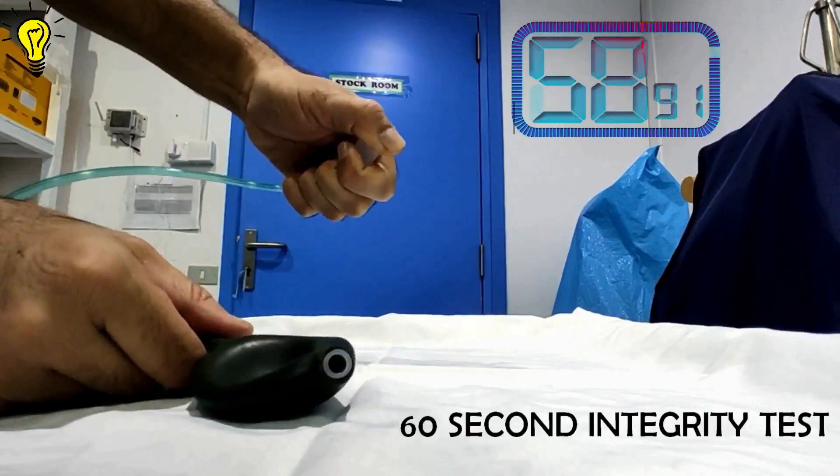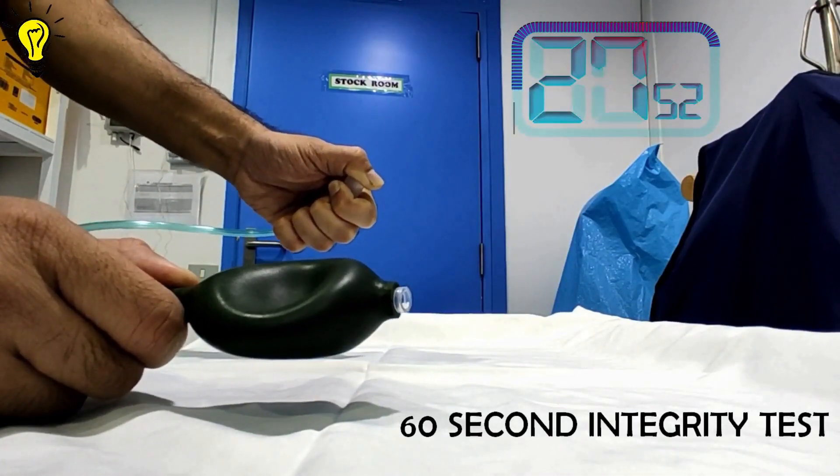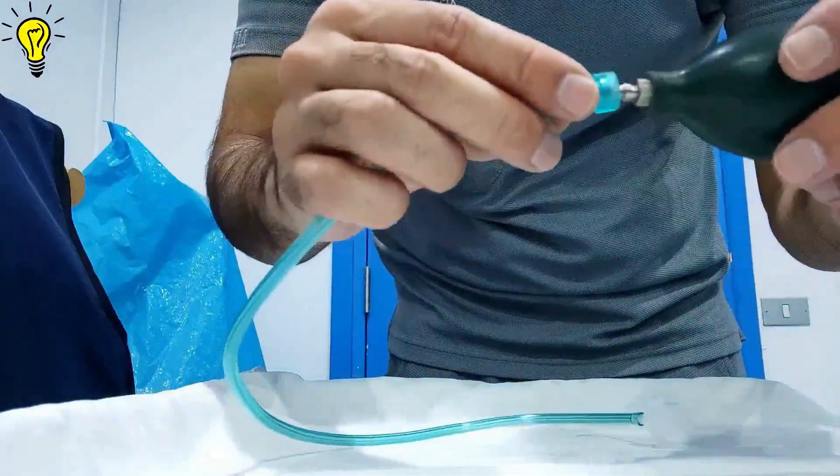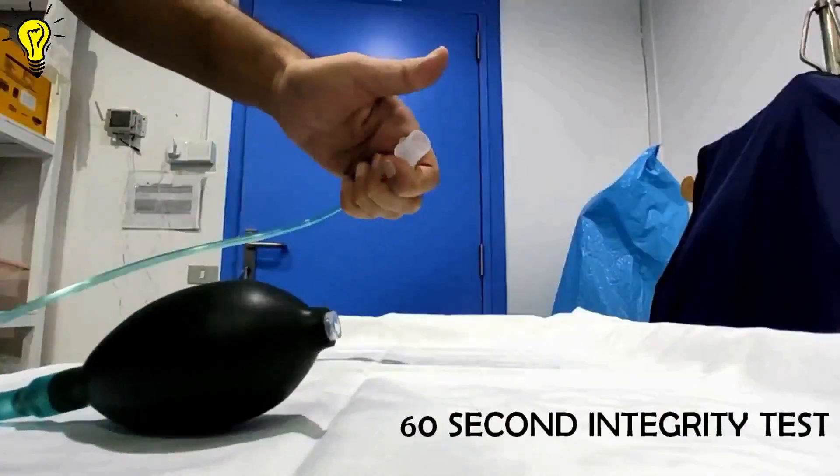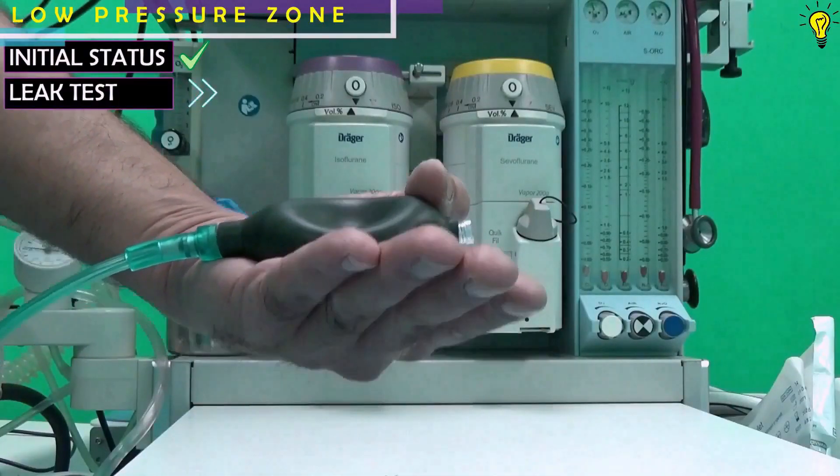Today we will make our own leak test suction device for anesthesia machine using a BP cuff and practically go through the leak test. Let's begin.